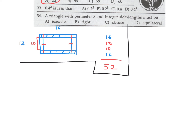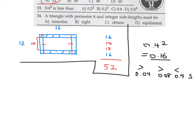0.4 squared is less than what? 0.4 squared equals 0.16. Comparing to the answer choices: 0.04, 0.4, 0.08, and a very small number. 0.16 is greater than 0.08 and 0.04, but less than 0.4. So C — 0.4 — is the answer.